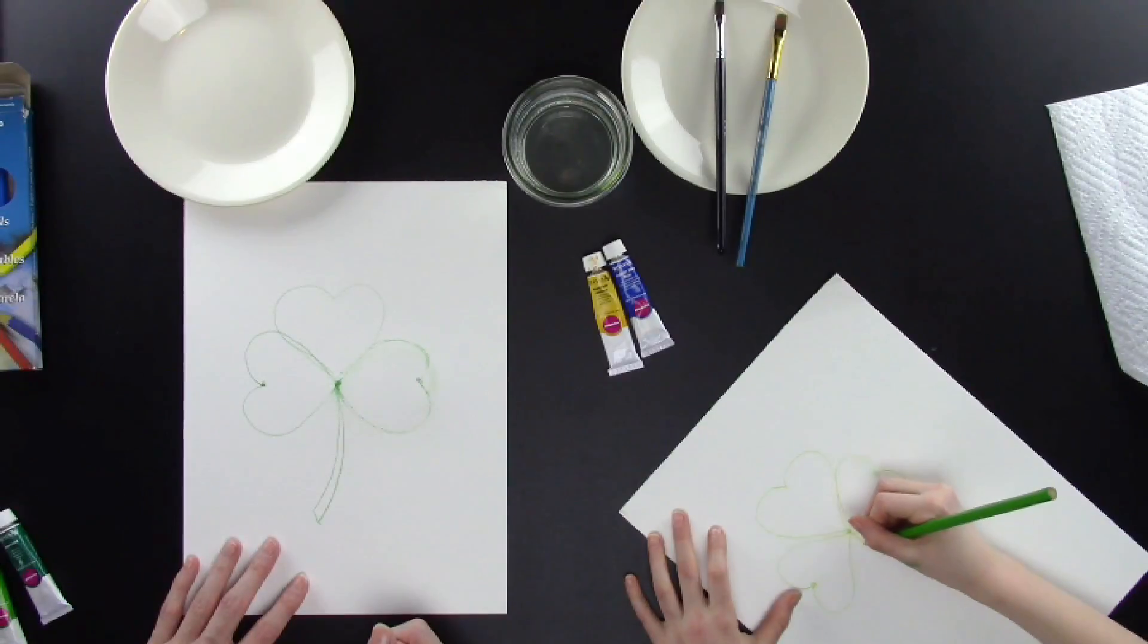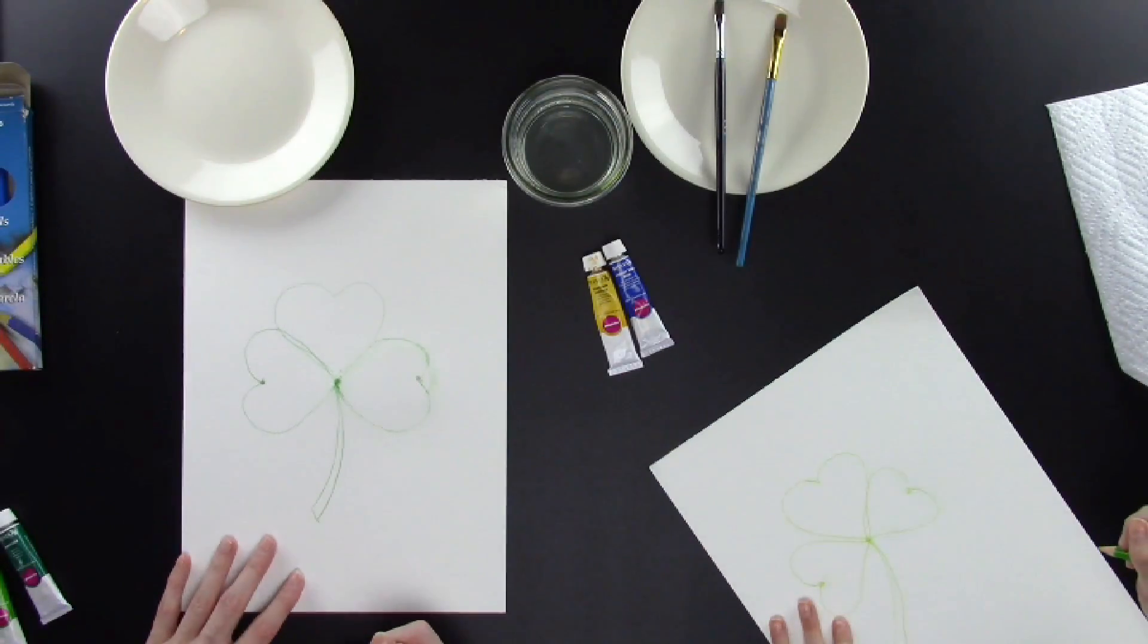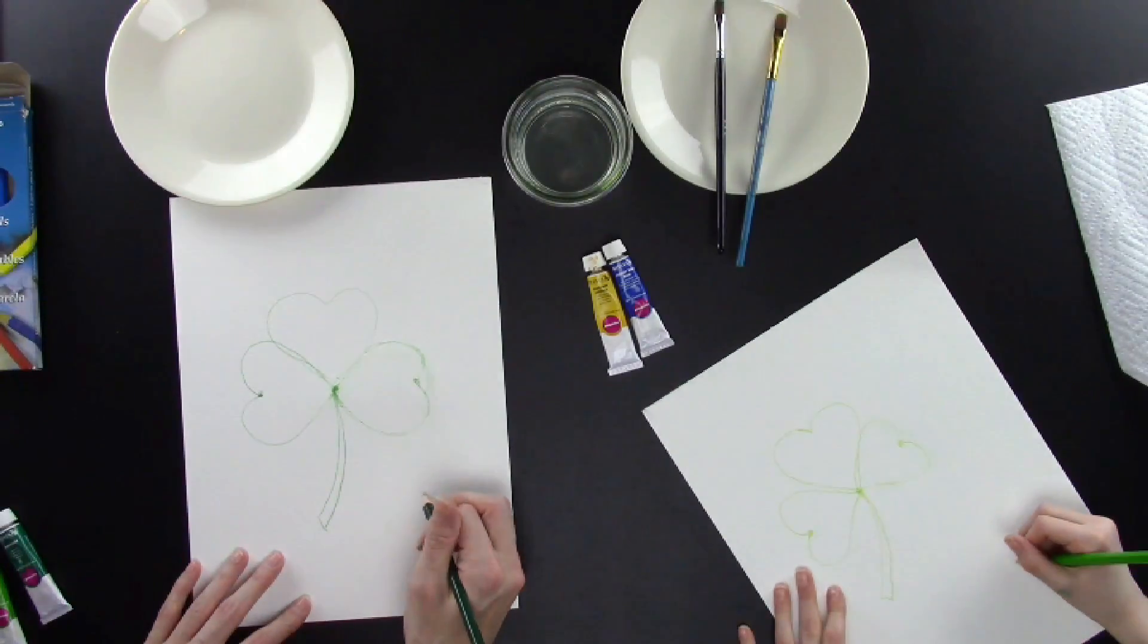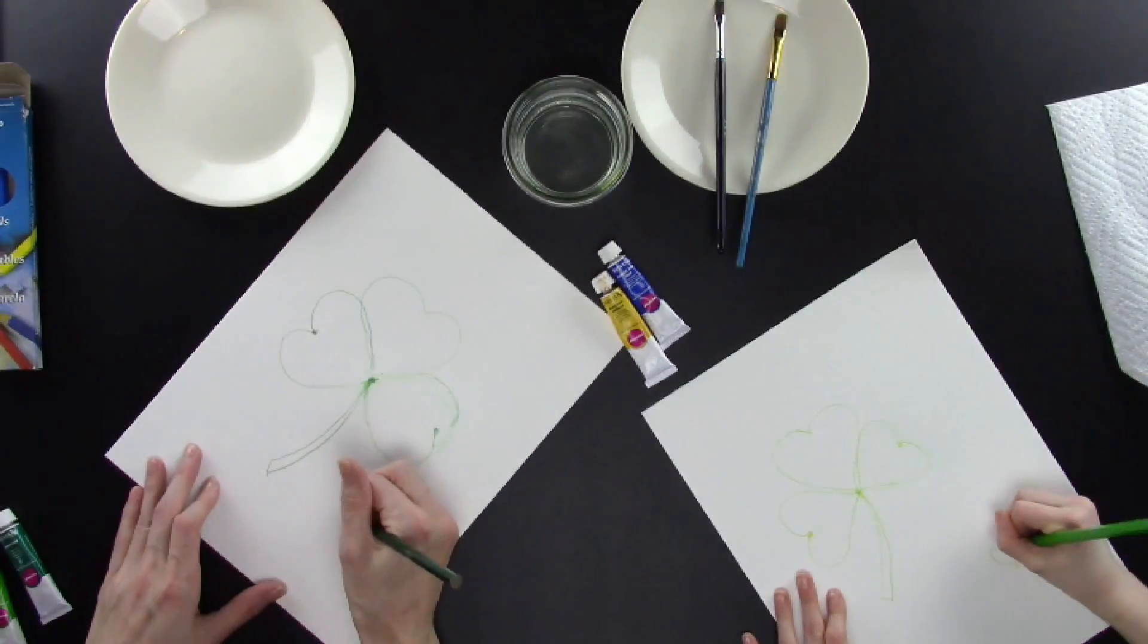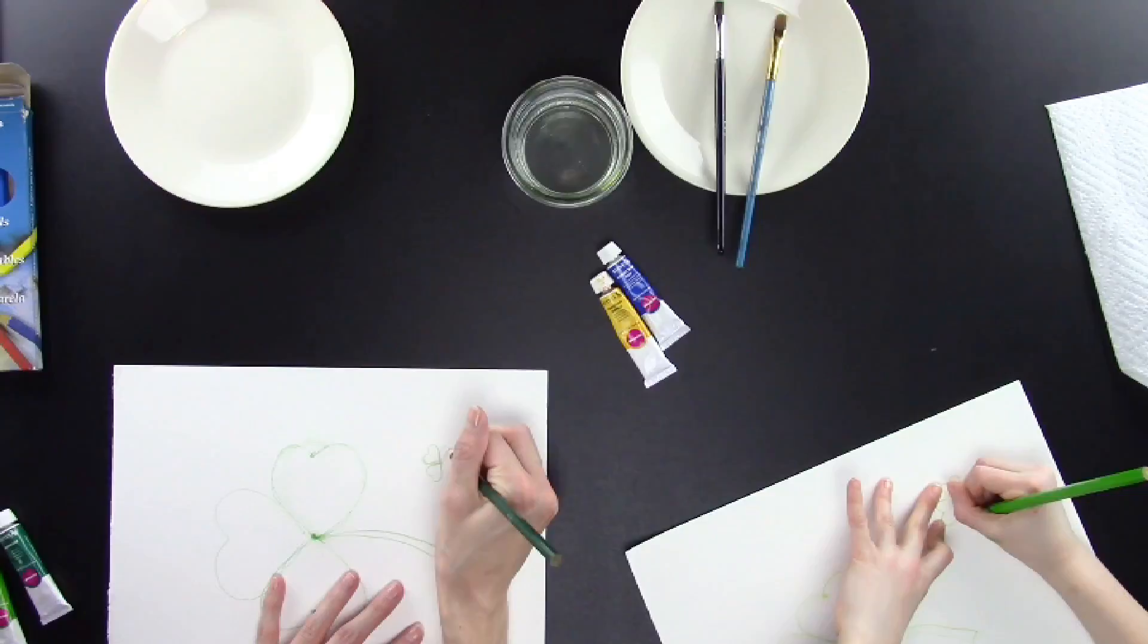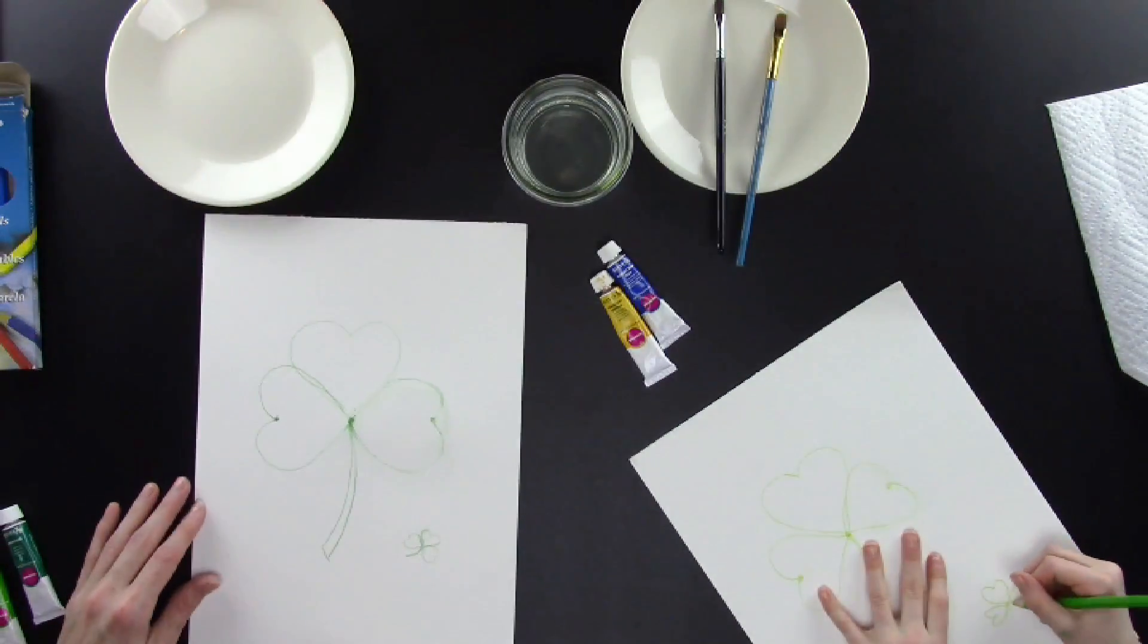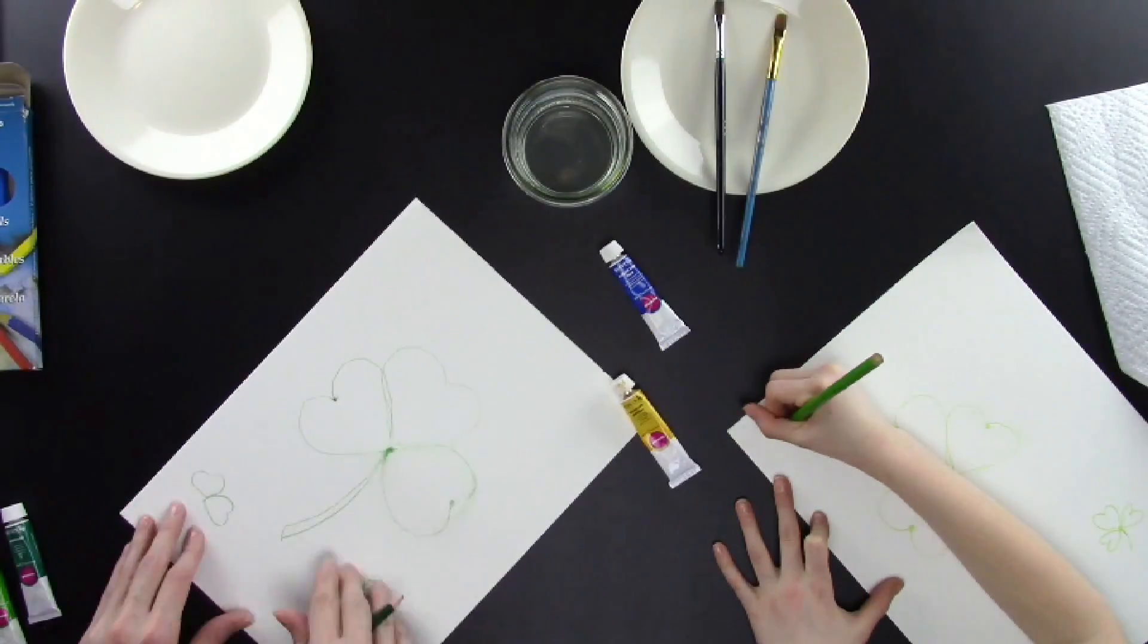Now I'm going to turn my paper to the right direction and draw my stem. I draw my stem going a little bit to the left and I let it get a little bit thicker at the bottom. Do you want to practice drawing some more shamrocks? I'm going to draw a little one at the bottom, maybe a bigger one over here on the left, and maybe a little one at the top.